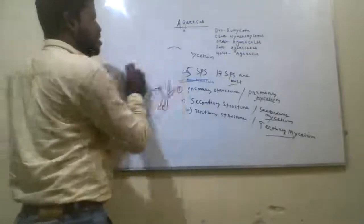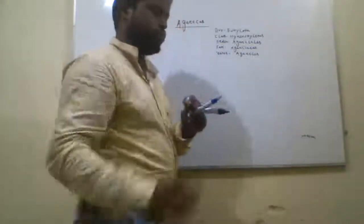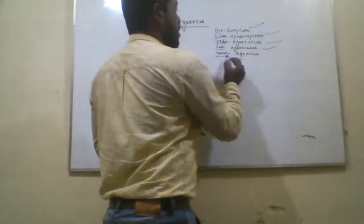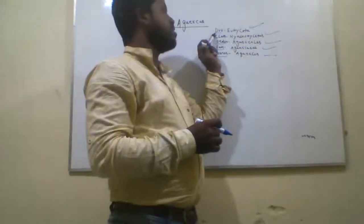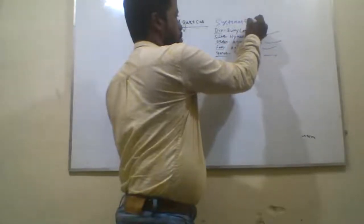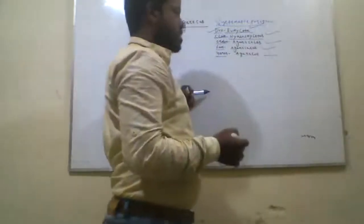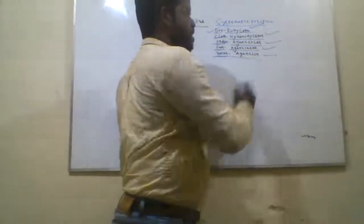Now discussing the systematic position of Agaricus: Division is Eumycota, Class is Hymenomycetes, Order is Agaricales, Family is Agaricaceae, and Genus is Agaricus.